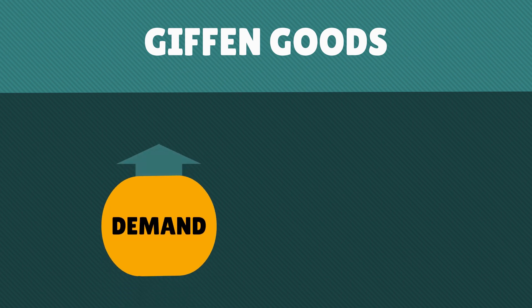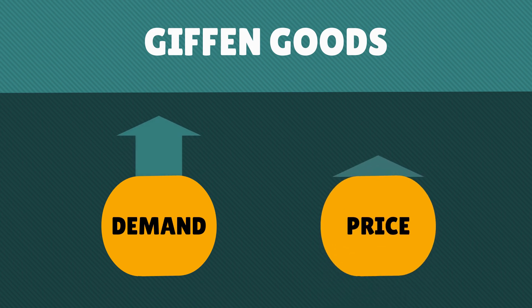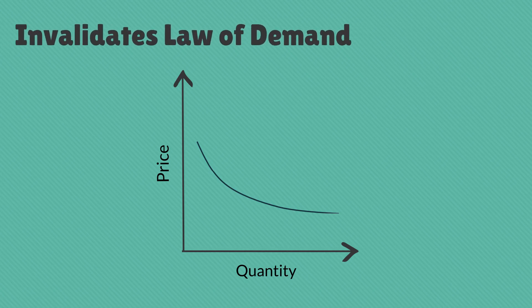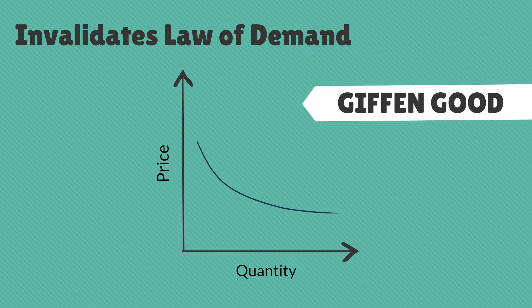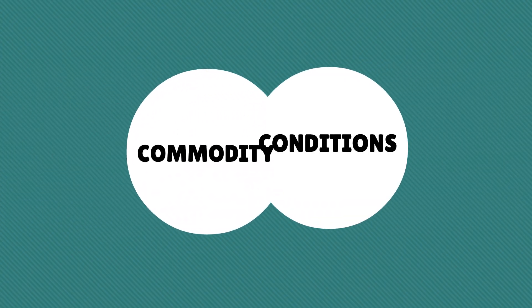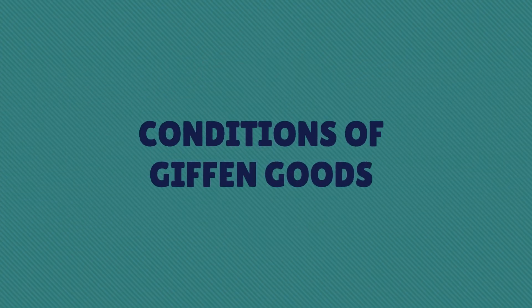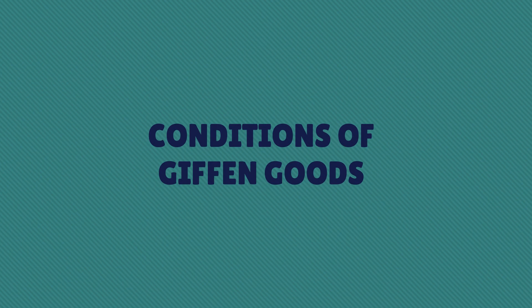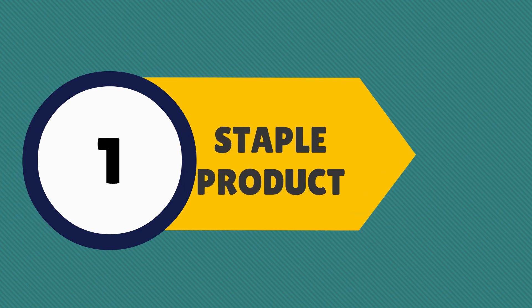Next, Giffen goods, found by Sir Robert Giffen. Giffen goods are products from the economic class where the demand for the product rises when the price also rises. This goes against the law of demand — when a Giffen good is involved, the downward demand curve becomes an upward curve.